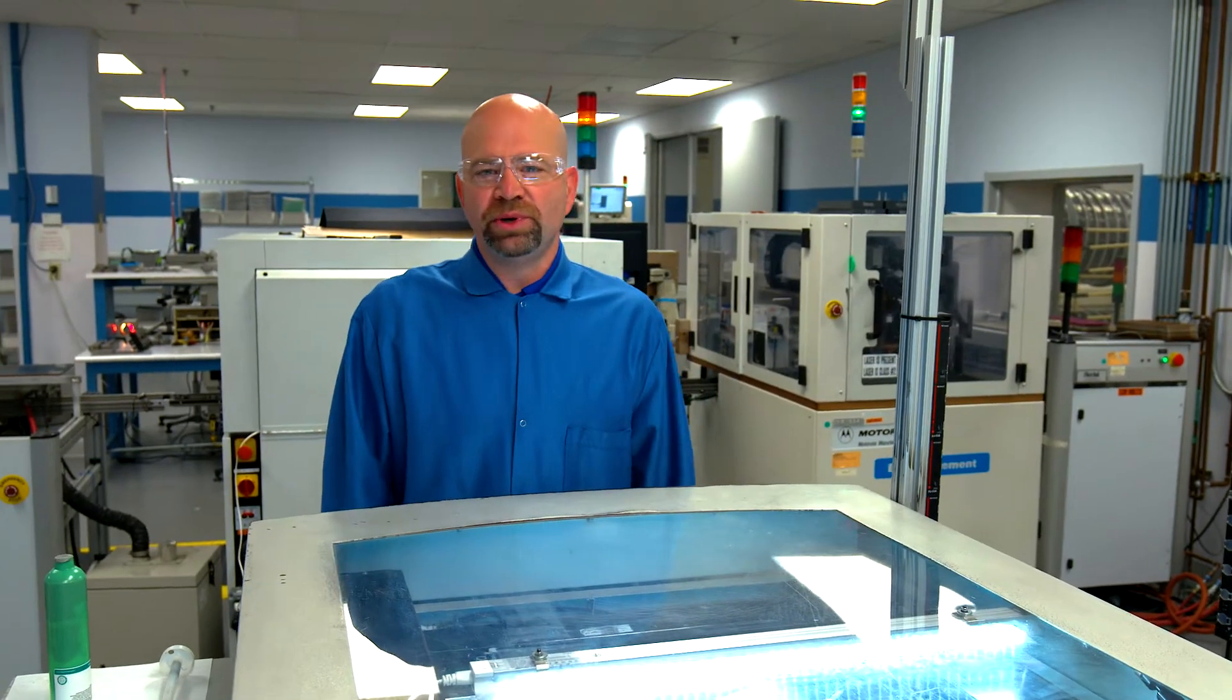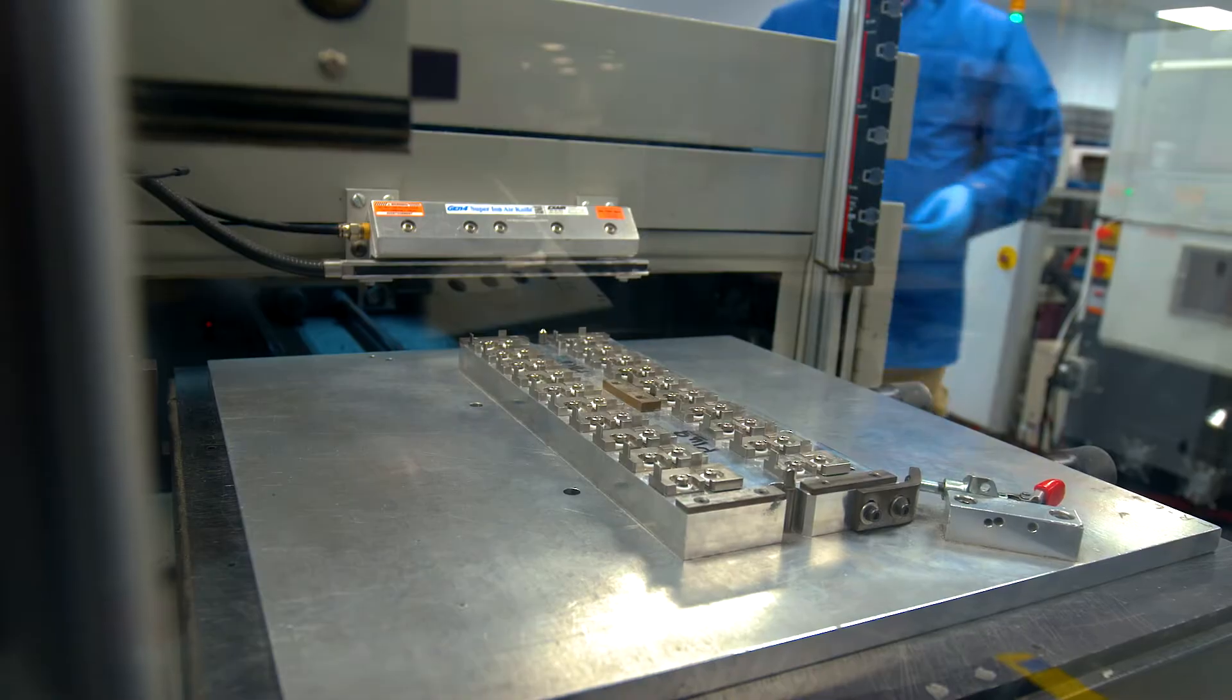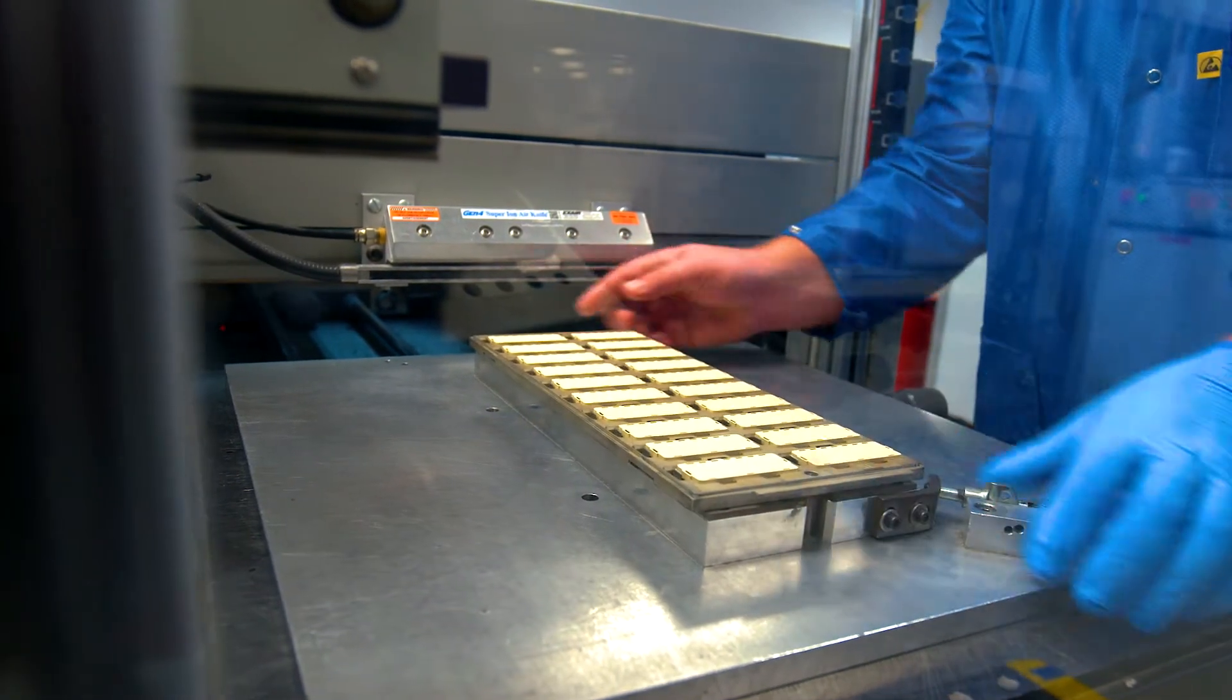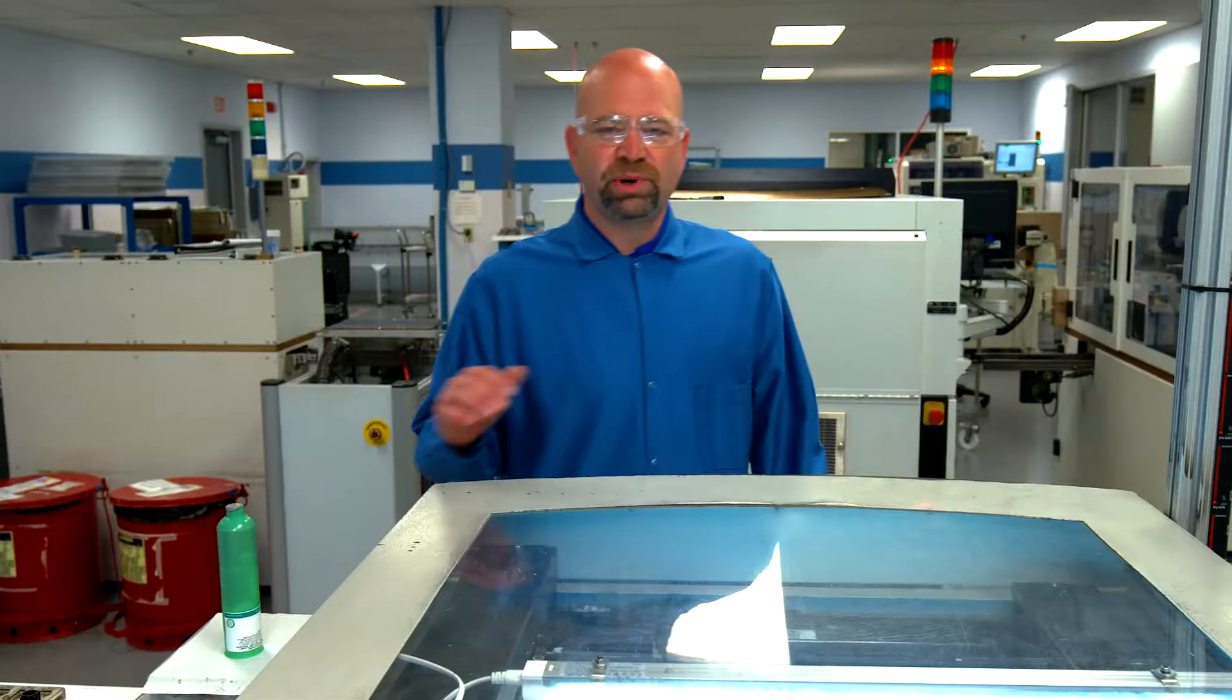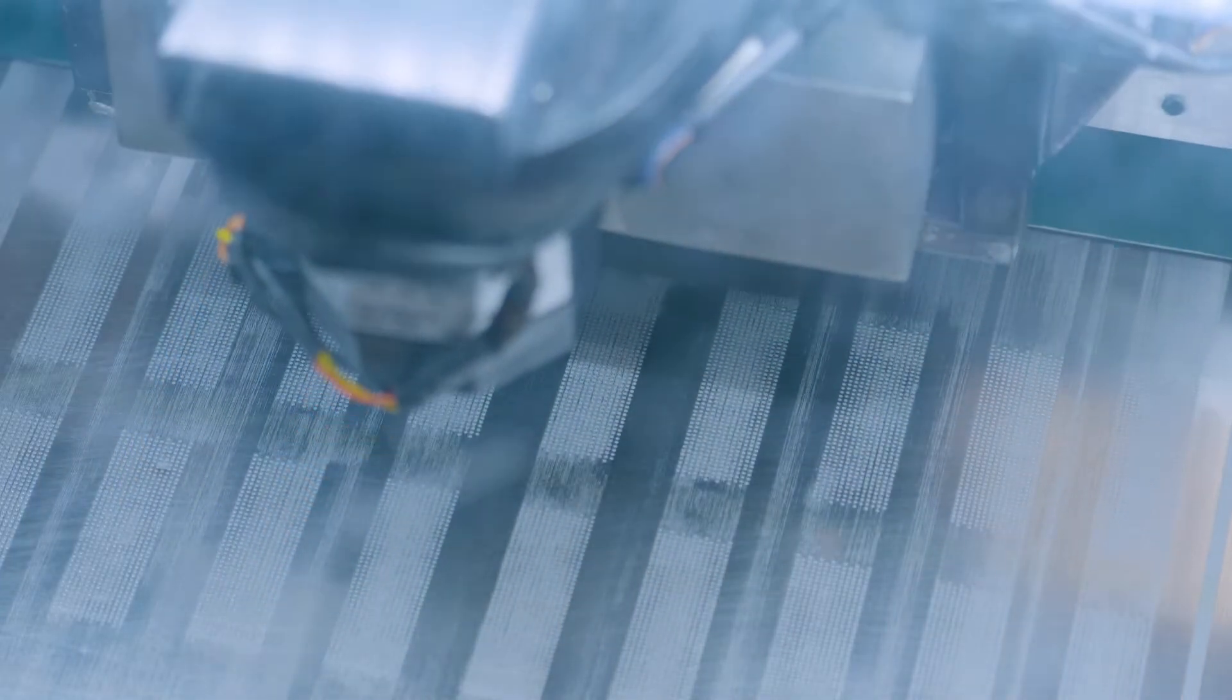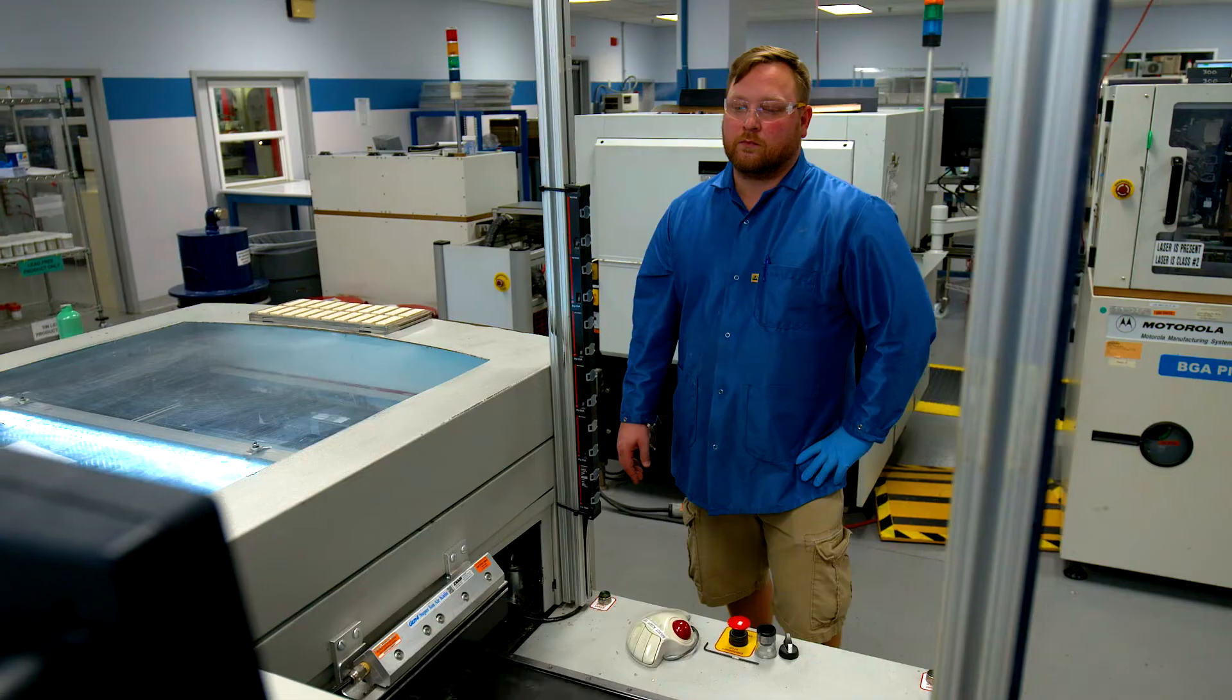So this is the BGA line. What we do here is we attach the ball to the back side of the connector. The first thing they're going to do is they're going to load the tray with the connectors, and then once they're loaded into the tray, they're going to bring it to the screen printer. The screen printer is a solder paste with fiducials in the screen and a squeegee that comes across, and it's going to fill up those back side ball pockets with solder paste.